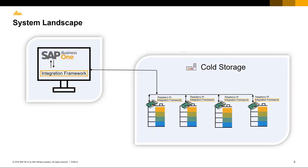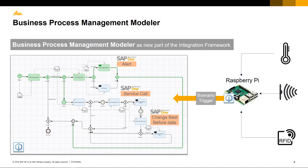The system landscape consists of a back-end system which is SAP Business One running the Integration Framework, together with Raspberry Pi, a small single board computer also running the Integration Framework, connected to sensors that could be managing one or multiple cold storage units. The business process management modeler is a new part of the Integration Framework which helps to orchestrate single scenario steps designed in the Integration Framework and runs based on instances.